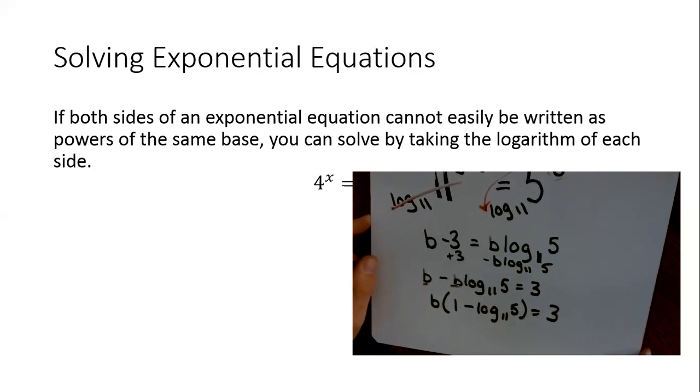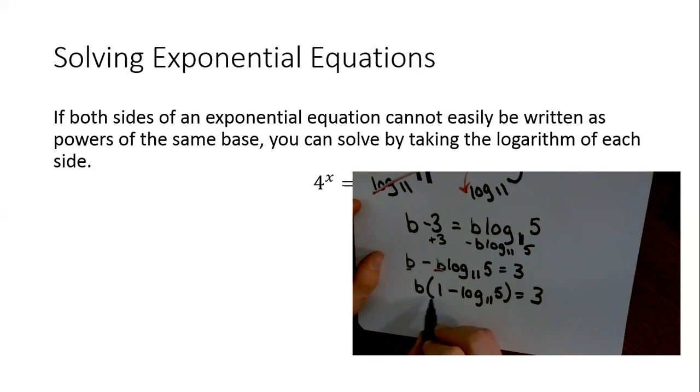And then I can say, well, the opposite of multiplication is division. So I can divide this whole quantity. So b should be 3 divided by 1 minus log base 11 of 5.